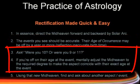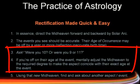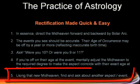So you ask: were you 10, were you 9, were you 11? And if you are off on the age of the event, then mentally adjust the midheaven to the required degree to make that aspect exact, to coincide with the event at the exact age it happened. Then using that new midheaven, find and ask about another aspect or event.